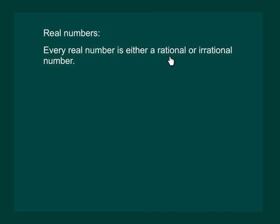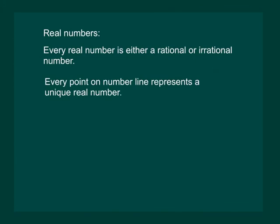So we come to a conclusion that every real number is either a rational or irrational number. Also, every point on the number line represents a unique real number. Hence, from now on, we will call it the real number line.